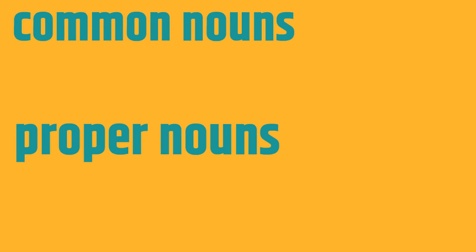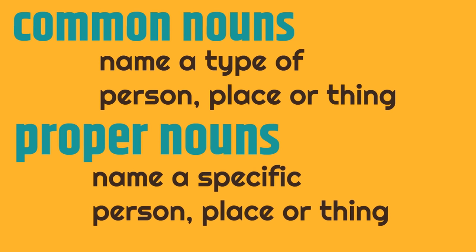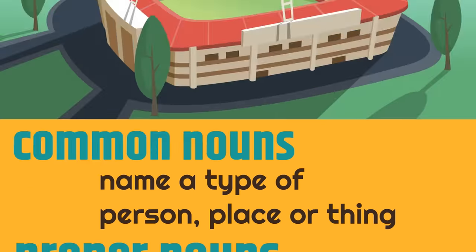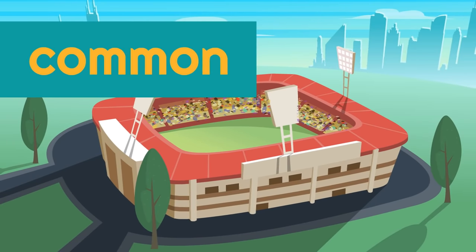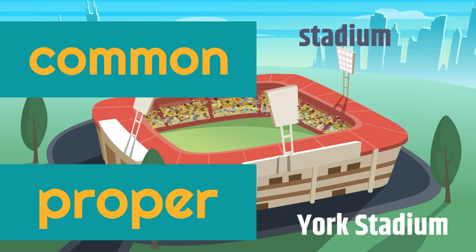Remember, common nouns name a type of person, place, or thing. Proper nouns name a specific person, place, or thing. This is called a stadium. The common noun for this is stadium. But let's say the specific name of the stadium is York Stadium. York Stadium would be the proper noun — it's the specific person, place, or thing. The common noun is stadium. York Stadium is the proper noun because it's the specific thing that this is.